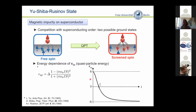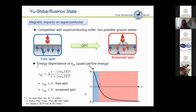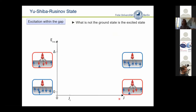We can't just immediately measure this curve — what we always do in an experiment is excitation spectroscopy: we go from a ground state to an excited state. In scanning tunneling spectroscopy, we try to add or remove an electron to the system. In the free spin state, binding the quasi-particle close to the impurity is the excited state. Vice versa, when you are already in the screened state, the free spin state is the excited state. So the excitation can be done by adding or removing electrons from the system.